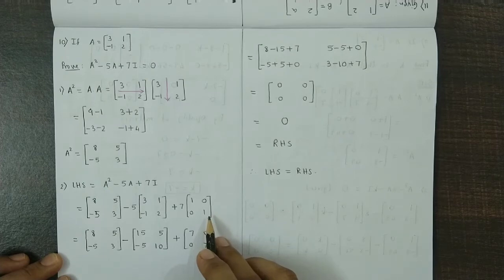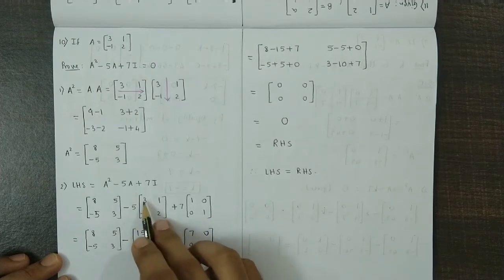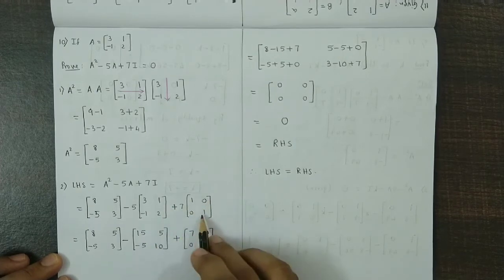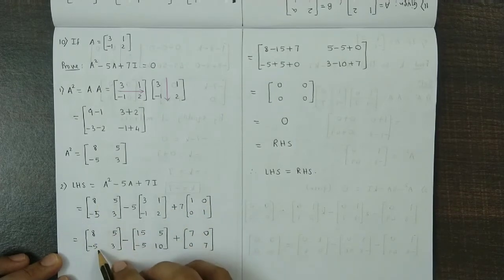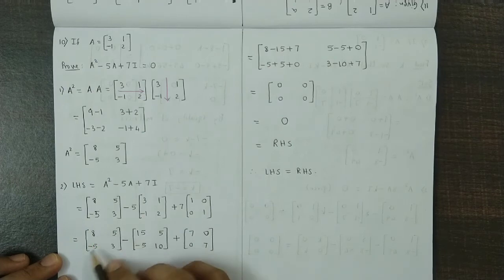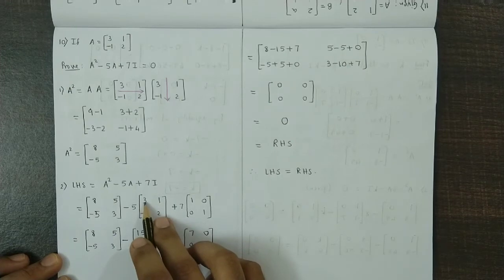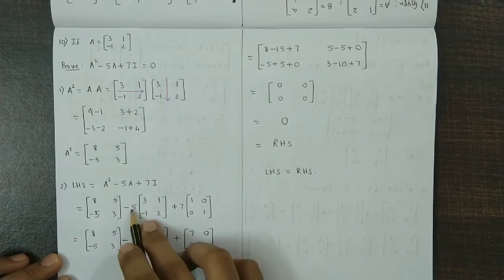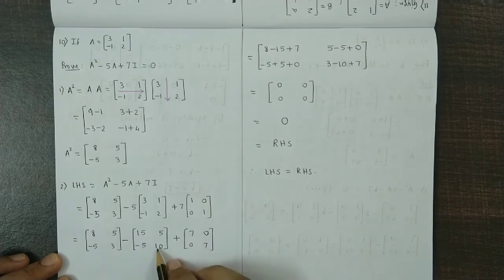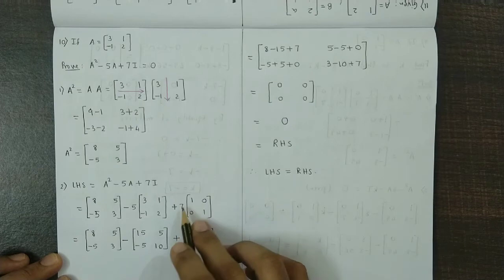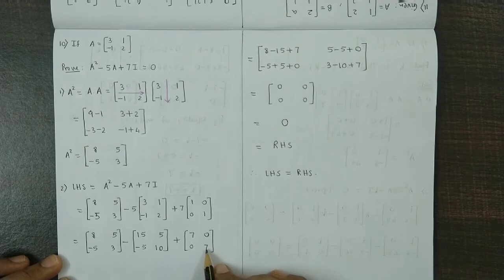Now we perform the scalar multiplication. We multiply 5 with each of these elements and multiply 7 with each of these elements. First matrix remains as it is: 8, 5, minus 5, 3. Multiplying each element by 5 we get 15, then 5, then minus 5 and 10. Multiplying each element by 7, we have 7, 0, 0, 7.